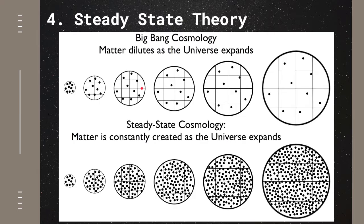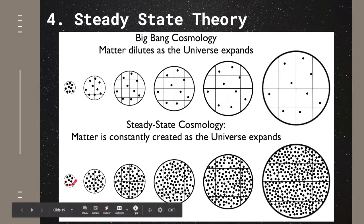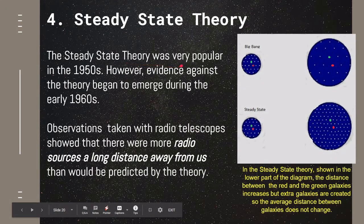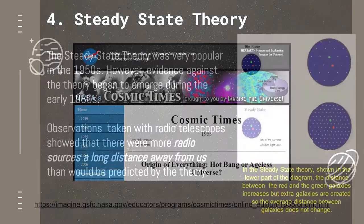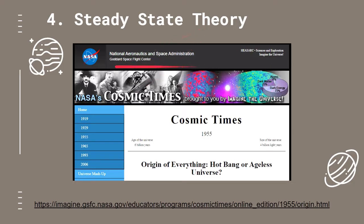Here is another comparison. From the Big Bang, there used to be a hot condensed initial state that slowly expands and occupies the expanding space. In the steady state model, as the space expands, new matter is constantly being created around the newly occupied space. The steady state theory was very popular in the 1950s; however, a lot of evidence against it began to emerge in the early 1960s. Observations taken with radio telescopes showed that there were more radio sources at long distances from us than would be predicted by the theory. You can check out this website from NASA that explains more about the comparison between steady state and the Big Bang theory.